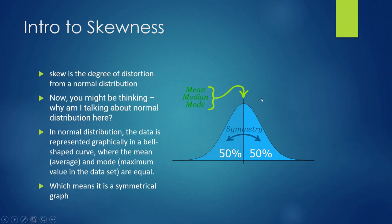A simple example is the height of people. Most people in the population will have a small standard deviation, and very few — rare people — will be very tall or very short. Normal distribution represents the probability of a person belonging to a particular height range.